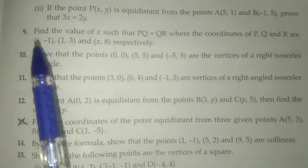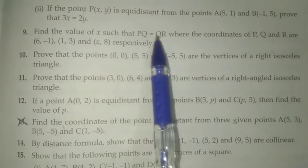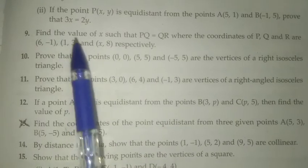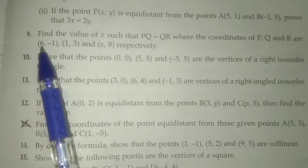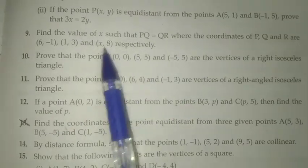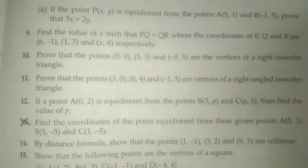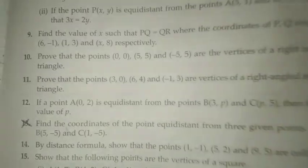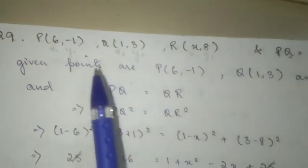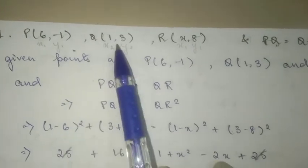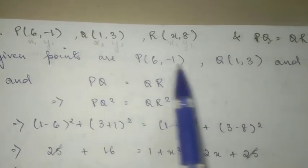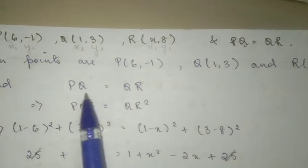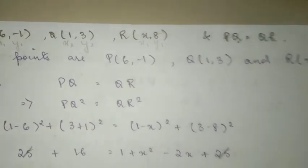We have B, Q, and R respectively, and Q is common, so a common point with coordinates x2, y2. Then you will solve it. Since BQ is equal to QR, first of all we'll write down the given points. BQ square will be equal to QR square and the rest you can solve it.